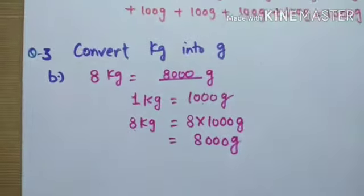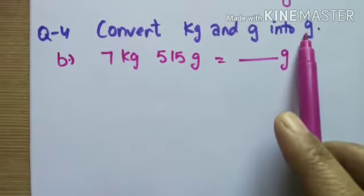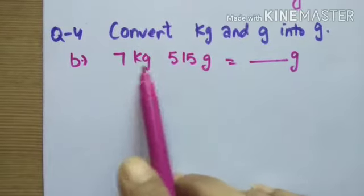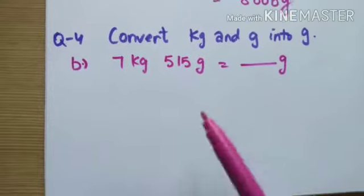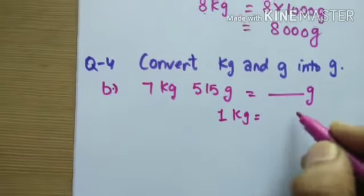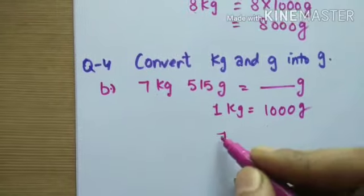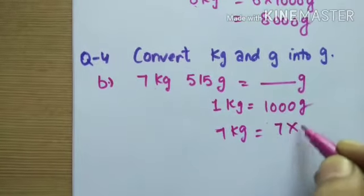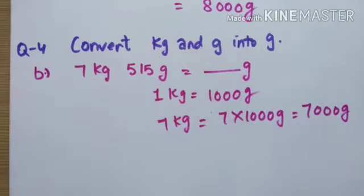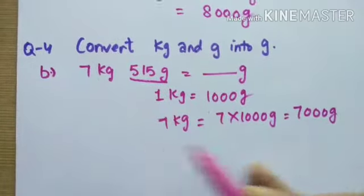Question number four: convert kilograms and grams into grams only. Both units are given — kilogram and gram — and we must convert everything into grams. First we solve the bigger unit: one kg equals one thousand grams, so 7 kg equals 7 multiplied by one thousand equals seven thousand grams.